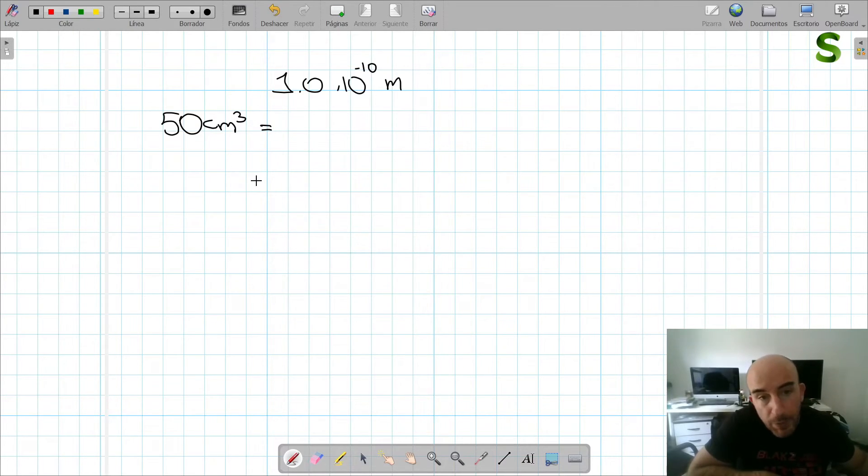First thing that we have to do is convert 50 centimeters to meters cubed. Remember that we have meters, then we have decimeters, then we have centimeters. Each step would be 10, but when it's to the power of 3, it's 10 cubed. So we would have to, as we're going upwards, divide by 10.